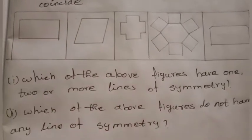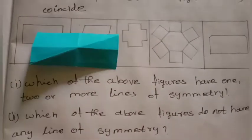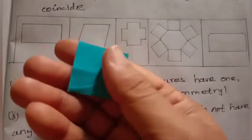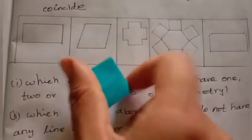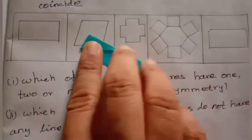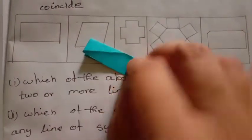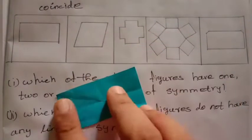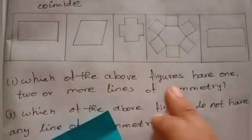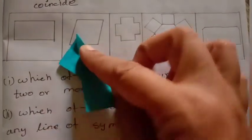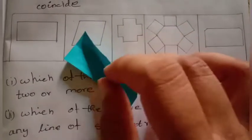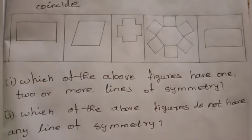First, what is the rectangle? Let's see the rectangle. We can draw one rectangle. Now, we have to fold it into two equal halves in the same way — this is one way. We move it a second way, folding two equal parts. So we have two lines of symmetry. If you join the diagonals, the two sides are equal. So there are two lines of symmetry.